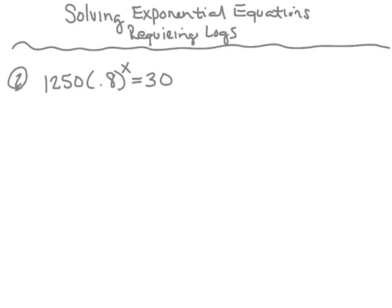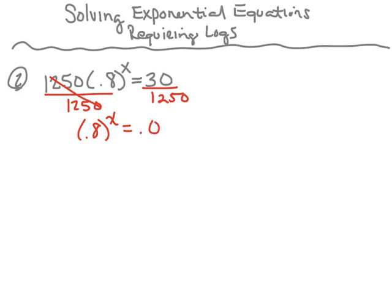Number two, we have the exponential 1250 times 0.8 to the x power is equal to 30. The first thing we're going to do is isolate the base and the exponent, so we need to move that 1250 over. We're going to divide both sides by 1250. So now I have 0.8 to the x power is equal to 30 divided by 1250, which is 0.024.